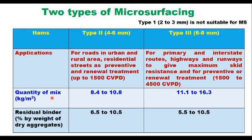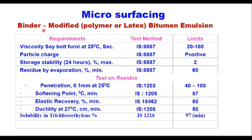The quantity of mix required for Type 2 is 8.4 to 10.8 kg per m², and for Type 3 — laid in a thickness of 6 to 8 mm — it is 11.1 to 16.3 kg per m². Residual binder, measured as percent by weight of dry aggregate, should be 6.5 to 10.5% for Type 2 and 5.5 to 10.5% for Type 3. The binder bitumen emulsion shall be a modified — either polymer modified or latex modified — bitumen emulsion conforming to requirements given in the relevant table.